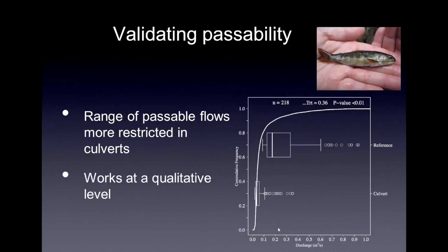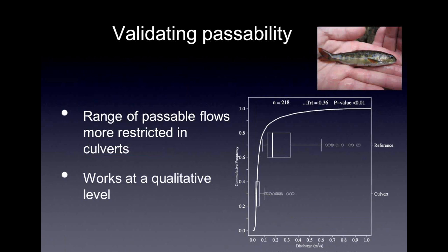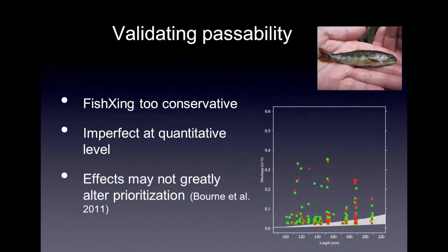We estimated how passable each culvert should be based on Fish Crossing and compared that to the data from the PIT-tagged fish. What Shad found — published in Transactions of the American Fisheries Society — was that the range of passable flows is more restricted in culverts: the fish doesn't get through the culvert when the discharge rate gets higher. But it didn't necessarily fit the predictions from Fish Crossing very well. While fish behaved as expected — not passing through culverts as easily as through a reference stream — Fish Crossing itself as a predictor of passability was much too conservative.